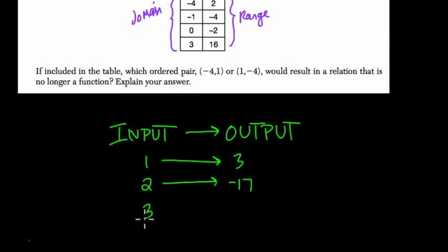Now if I had a third input there, let's say 3 also goes to negative 17, this is still a function. Why? Well, because if we start at any of our inputs, 1, 2, or 3, we know exactly what outputs they're leading to. It's okay that 2 and 3 are sharing the same output. That's still a function.